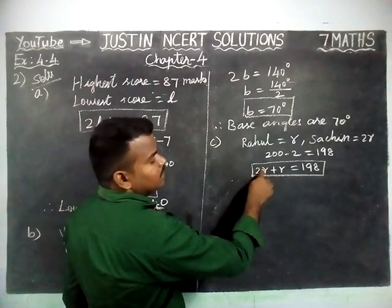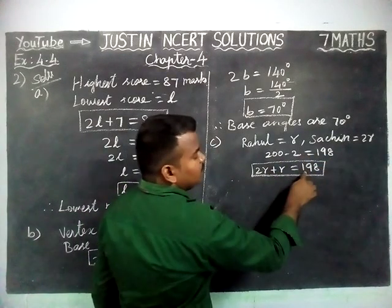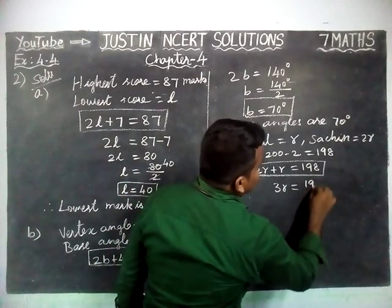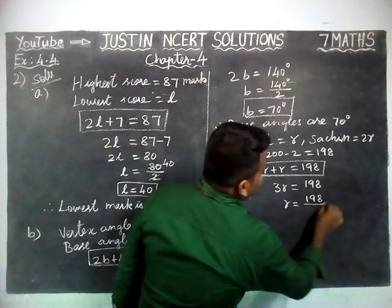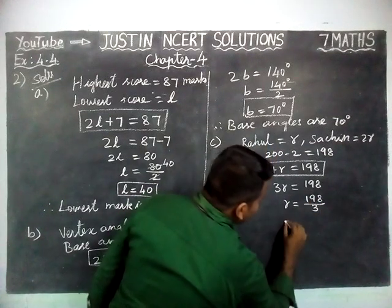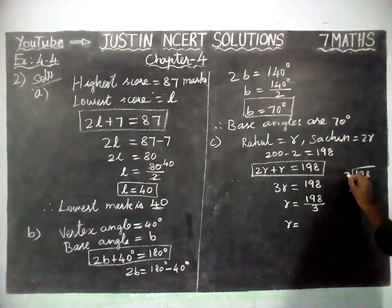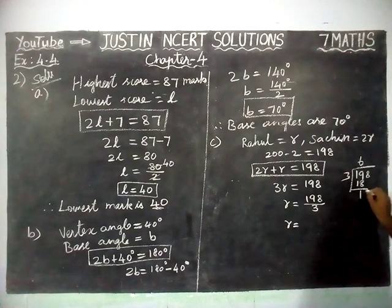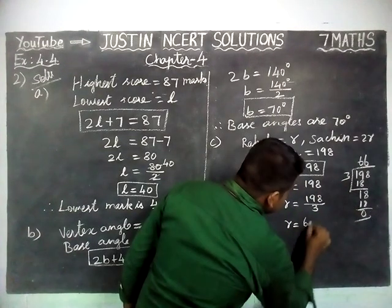Rahul's run is R, and the total is equal to 198. So 3R equals 198. R is equal to 198 divided by 3. Dividing 198 by 3: 3 into 6 is 18, 3 into 18 is 18, remainder 0. So R is equal to 66.